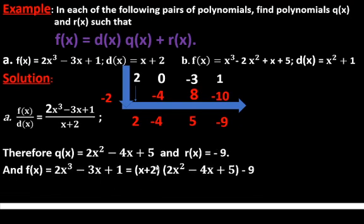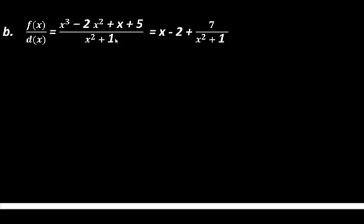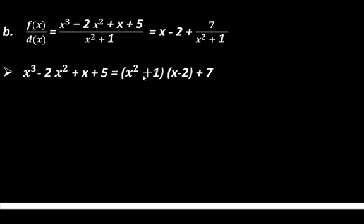Finally, we can express the function as a product of the divisor and the quotient plus the remainder. For the second example, we have a degree three polynomial divided by x²+1. The quotient is x - 2 and the remainder is 7, so q(x) = x - 2 and r(x) = 7. Therefore f(x) = (x²+1)(x - 2) + 7.